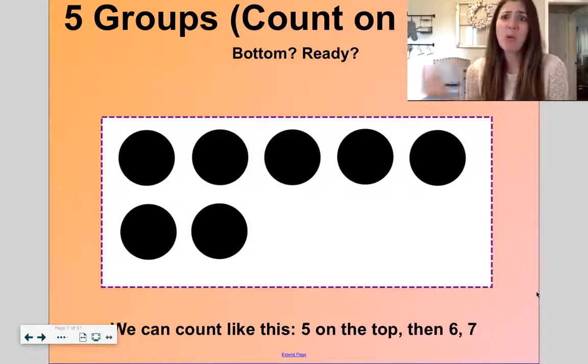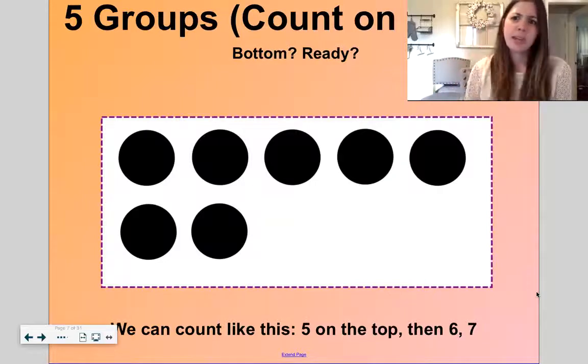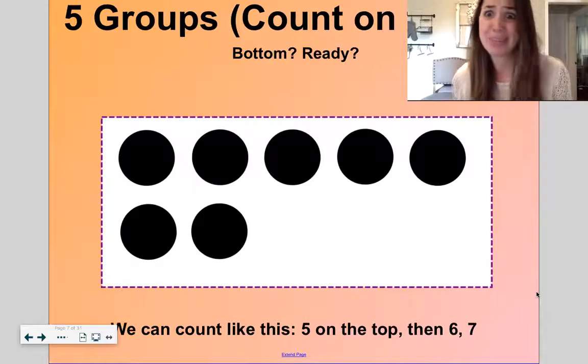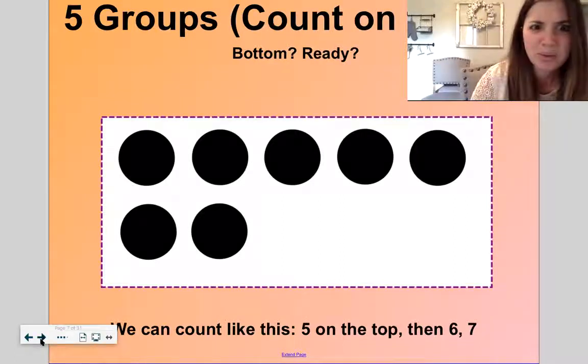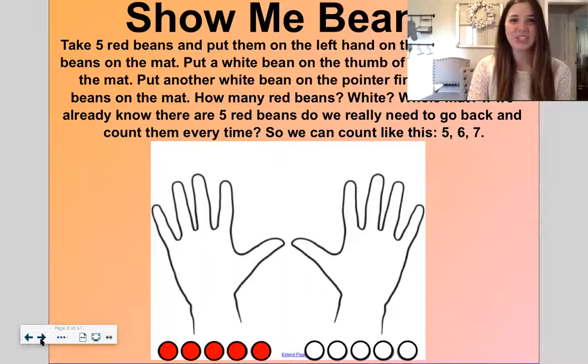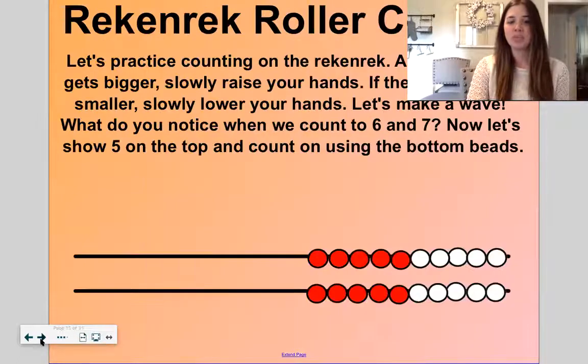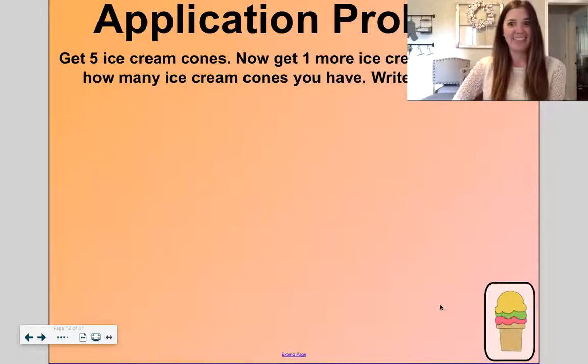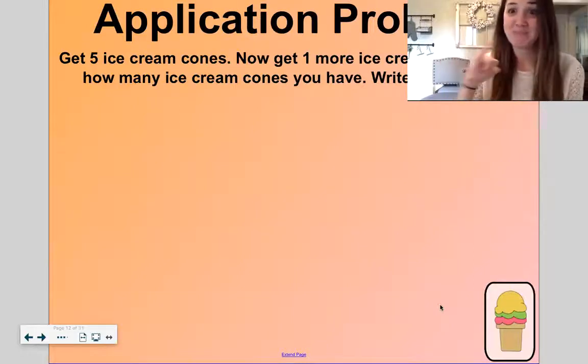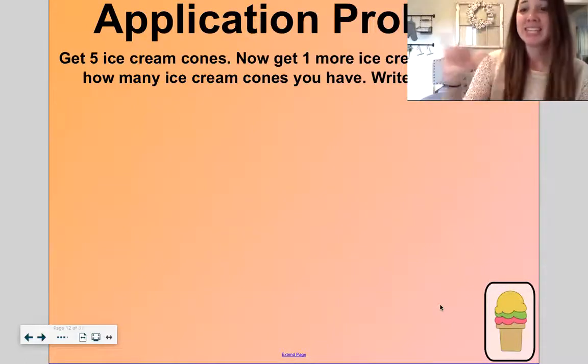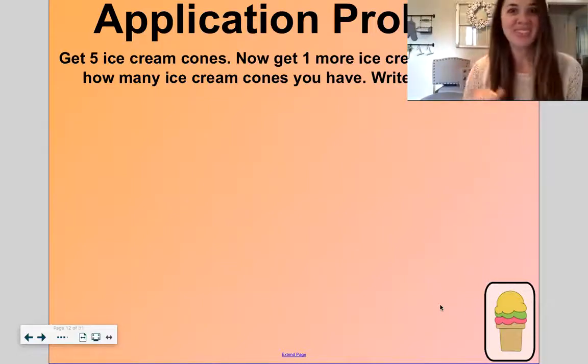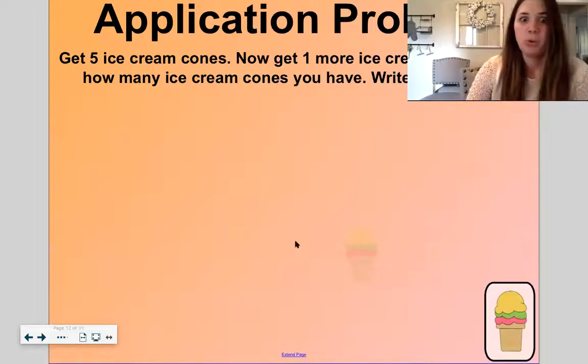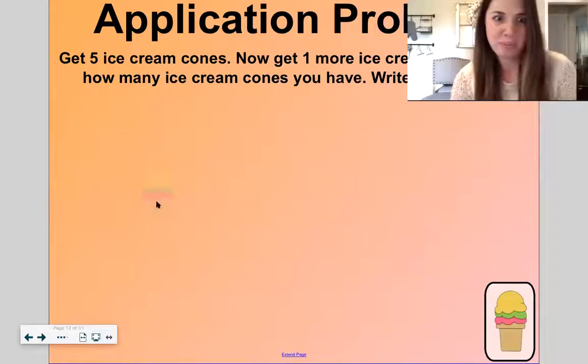I like to tell you a lot of different ways so that you can make sense of what makes the most sense to you. Let's jump right to our application problem. I love ice cream. Would anybody else say me too? This is the sign for me too. So, let's count out five ice cream cones. We're having maybe a big ice cream party in our class.